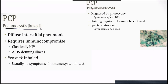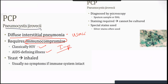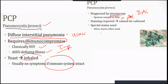Pneumocystis jirovecii pneumonia causes diffuse interstitial pneumonia, very famous in USMLE and SMLE. This pneumonia occurs in immunocompromised patients — classically HIV — and is an AIDS-defining illness. The organism is a yeast that is inhaled; if the immune system is intact, no symptoms occur. It is diagnosed by microscopy or bronchoalveolar lavage using a special silver stain that detects Pneumocystis jirovecii.